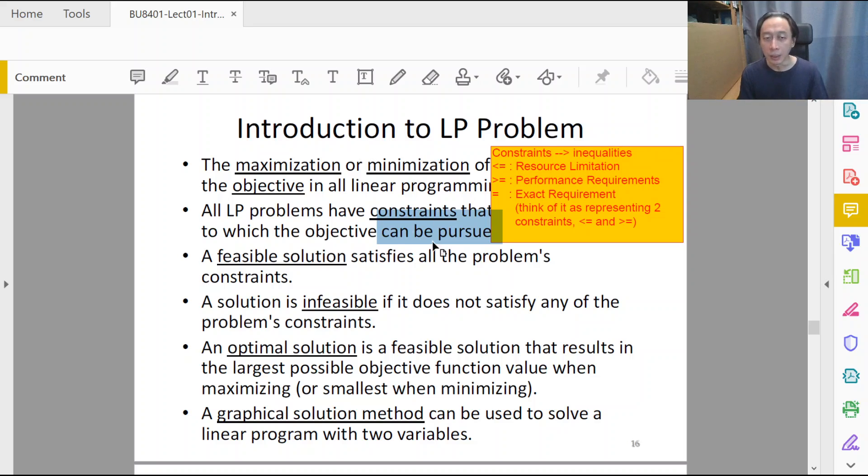Some further terms in LP. A feasible solution satisfies all the constraints. So we'll have a bunch of less than or equal to, greater than or equal to—like five inequalities. A feasible solution will meet, will satisfy, will agree with all the problem's constraints, all the inequalities.